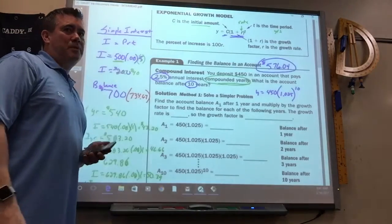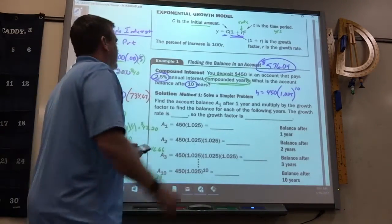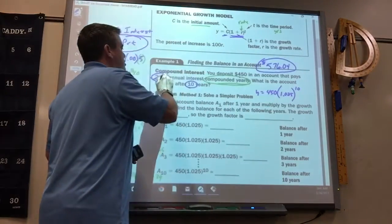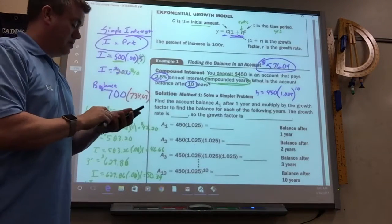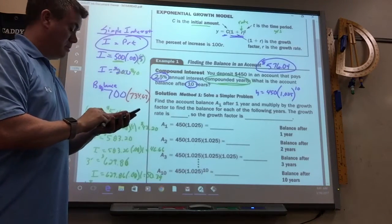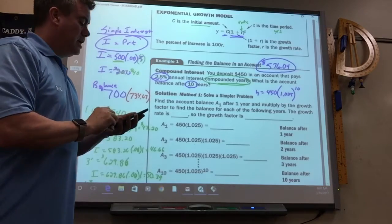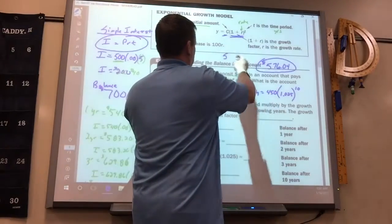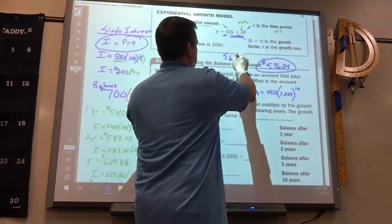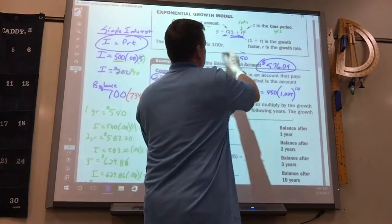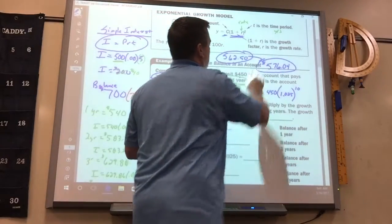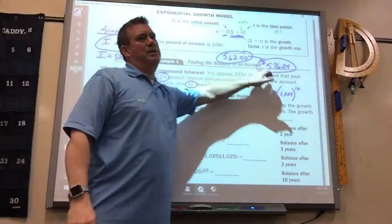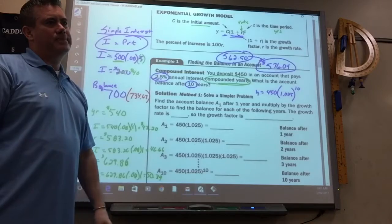So that would round to $576.04. Now, if this was a simple interest problem, if we just use this formula, you'd take 450 times the rate times the time. And you would get $562.50. So it's pretty close. So that's why they call it simple because it gives you an idea, but it's not going to be exact if it's a compound interest.